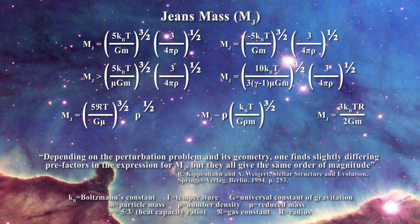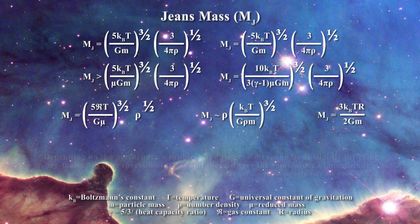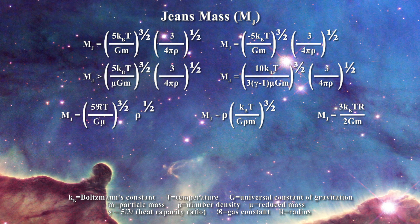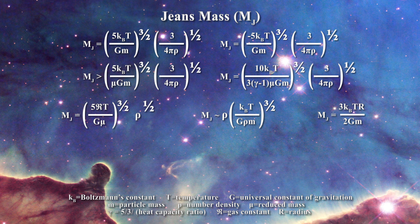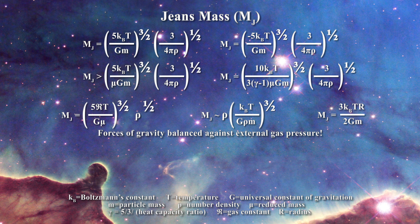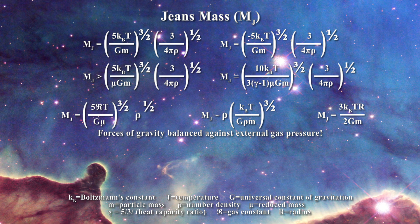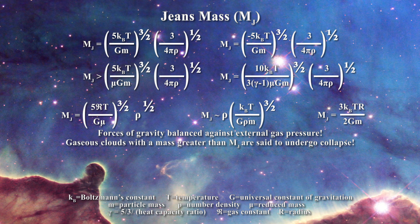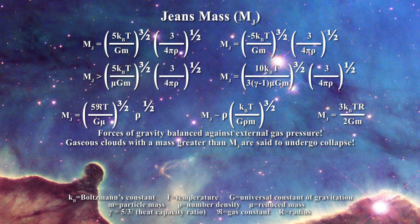The Jeans mass represents the mass of a gaseous cloud which is stable relative to collapse because the forces of gravity within the cloud are perfectly balanced against the external gas pressure. If a gaseous cloud has a mass greater than the Jeans mass it will collapse due to the forces of gravity.